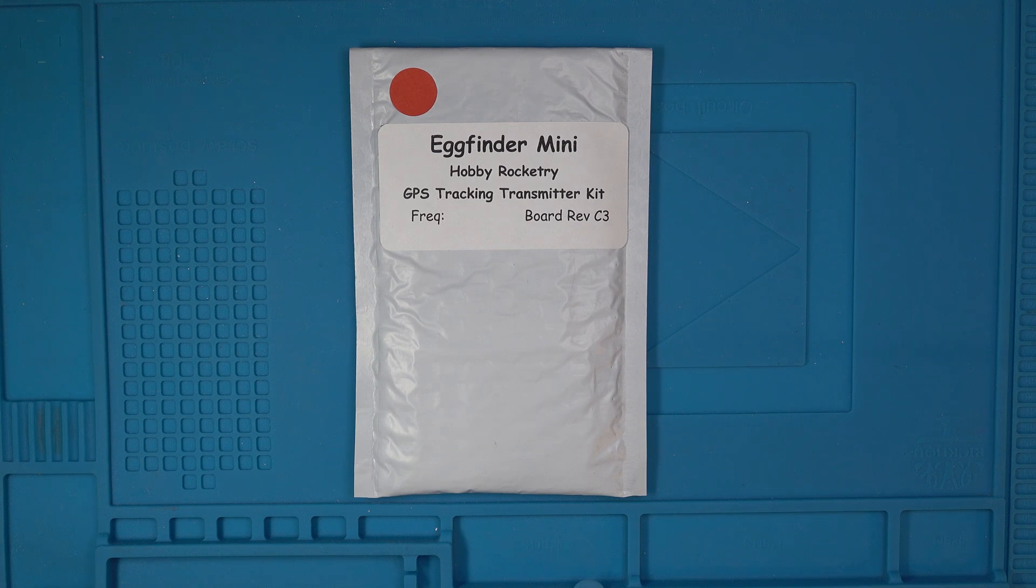Hi, today we're going to go over the build of an Egg Finder Mini transmitter kit which is part of the GPS tracking family in Egg Timers products. It is the smaller version of the Egg Finder TX which is functionally the same except that the larger TX can also handle an open logger module which the Mini cannot fit because it's too small and also the Mini is smaller so it has a smaller ground plane.